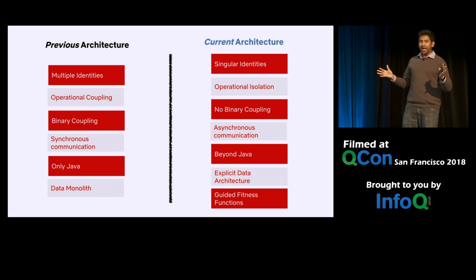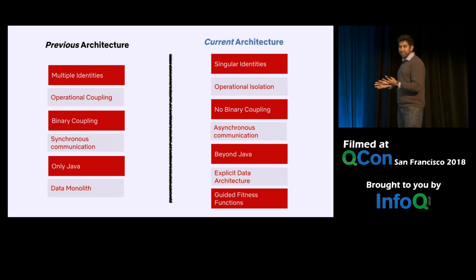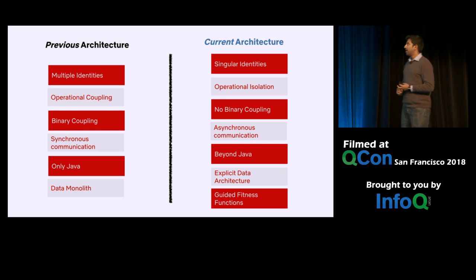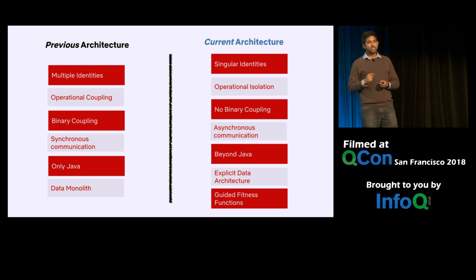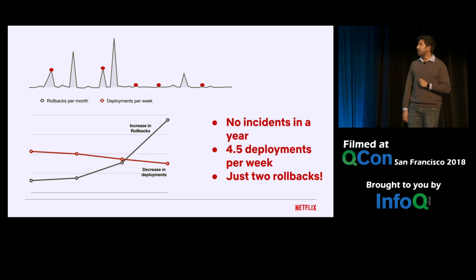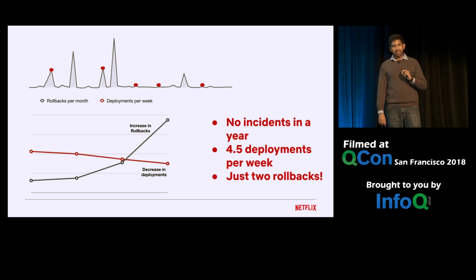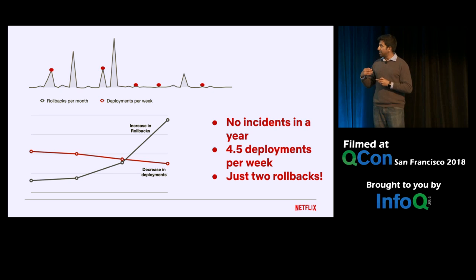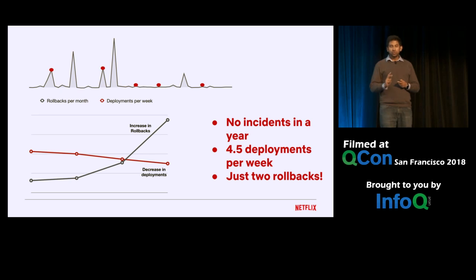The guiding principle: define fitness functions to act as your guide for architectural evolution. In terms of all the different attributes we talked about, this is how the previous architecture stacks up with the current architecture. Current architecture has singular identities, operational isolation, almost no binary coupling, allows for asynchronous communication, enables going beyond Java, has an explicit data architecture, and has a set of fitness functions guiding evolution. Coming back to the initial graphs: with respect to high availability, in the one year since inception, we have not had any single incident in which the play API service was a direct or indirect contributor. And for our goal of five deployments per week, we are averaging around 4.5 — meaning almost every weekday during business hours we are shipping — with only two rollbacks, not related to a customer-facing issue but around a data quality issue.